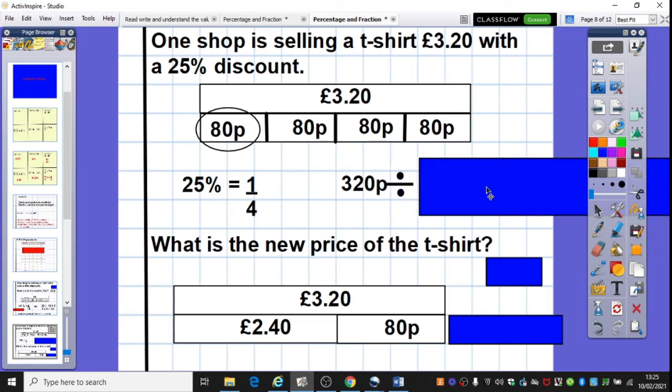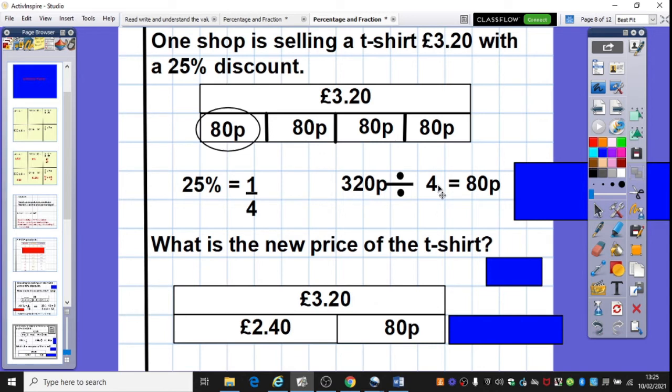So actually what I've done is I've turned it into pence. So I've done 320 divided by 4. I know that 32 divided by 4 is 8. Therefore, 320 divided by 4 is 80, 80p. So a quarter is 80p. 25% of £3.20 is 80p. It's a very cheap t-shirt.